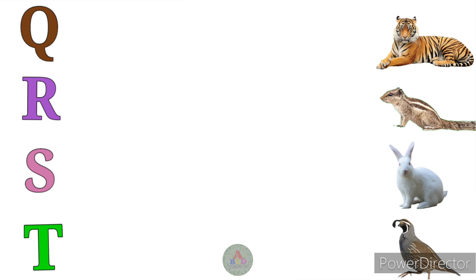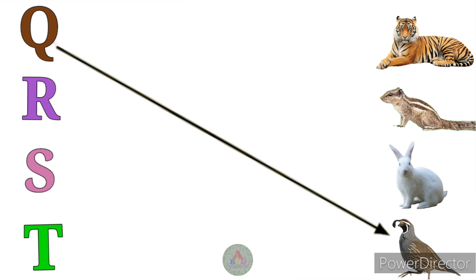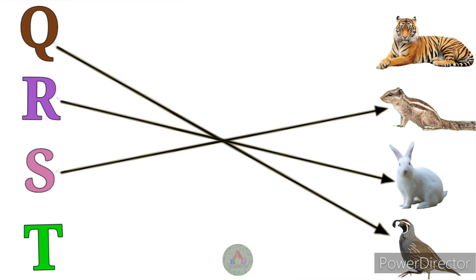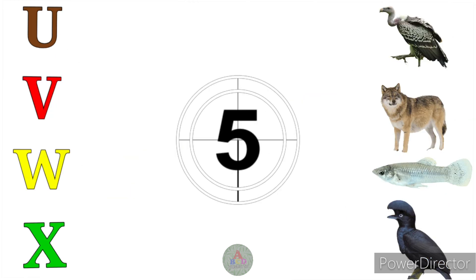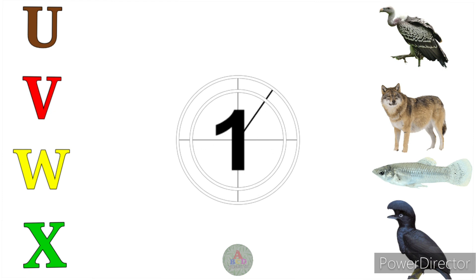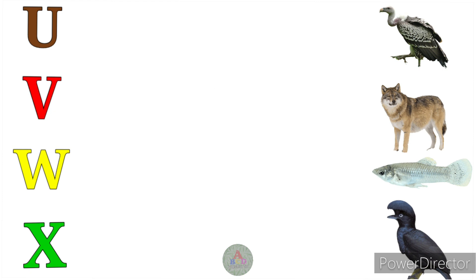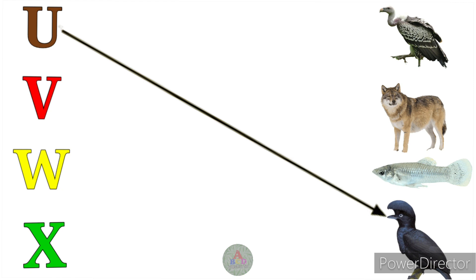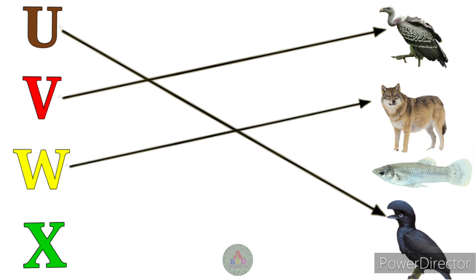Q for Quail, R for Rabbit, S for Squirrel, T for Tiger. U for Umbrella Bird, V for Vulture, W for Wolf, X for X-Ray Tetra.